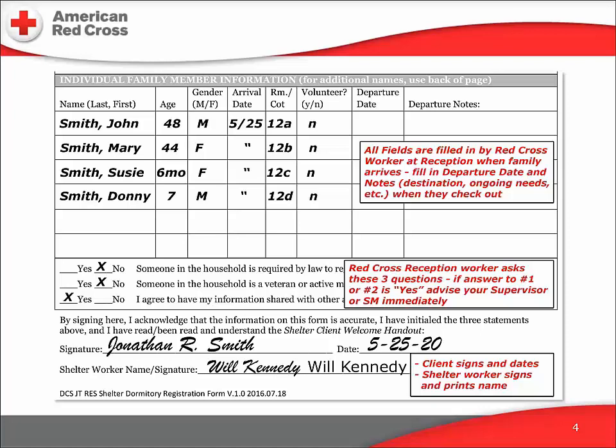A positive answer to this first question should be reported to the shelter manager before the client and family leave the registration desk. In most cases, this question will elicit a puzzled reaction from the client who doesn't really understand the question — we accept that as a no. The second question allows us to identify someone who might be eligible for assistance from the Department of Defense or the Veterans Affairs Agency. The third question is really a statement: the Red Cross needs permission from the client to share his or her information with other disaster agencies such as FEMA, state emergency management, or county and city EMS agencies.